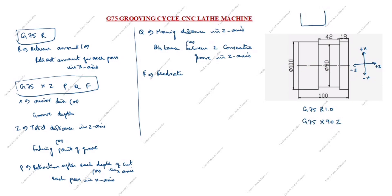Next is P. P is the depth of cut in the X axis. P value is written in microns. So 2000 microns equals 2 mm — P is 2000.